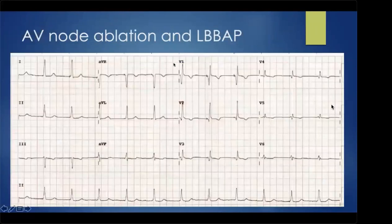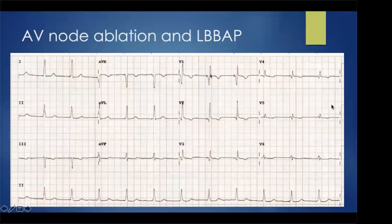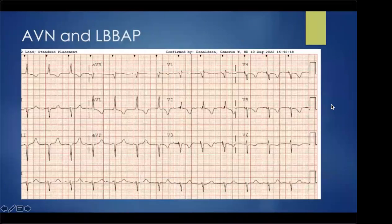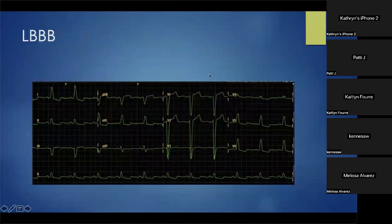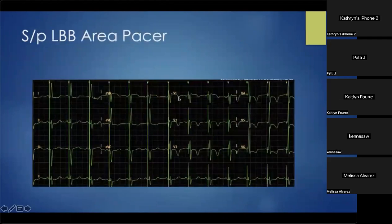Here is an example of a patient who got an AV node ablation and left bundle area pacer — a textbook example showing pseudo-right bundle branch block. V1 looks over the right ventricle; with pacing from the left bundle, the LV activates quickly and there is late right ventricular activation, producing the pseudo-RBBB pattern. For patients with intrinsic LBBB, you can still capture the remnants of the left bundle — the block tends to be high near the His bundle, so you can recruit the distal left bundle and still get excellent results.